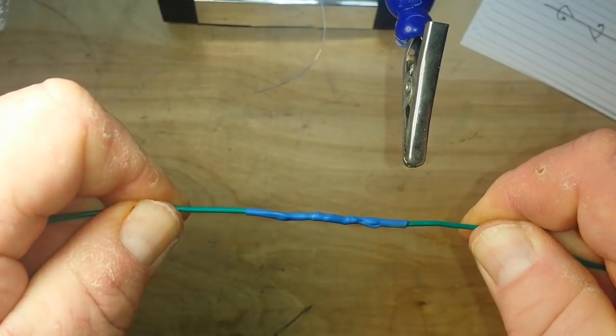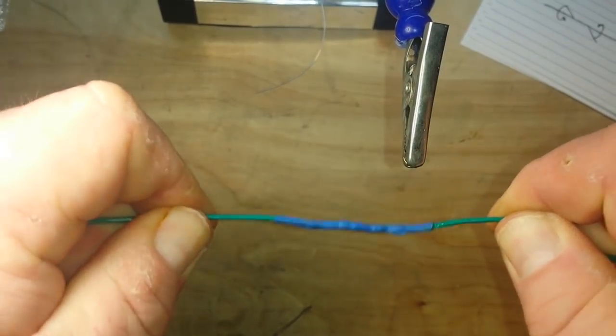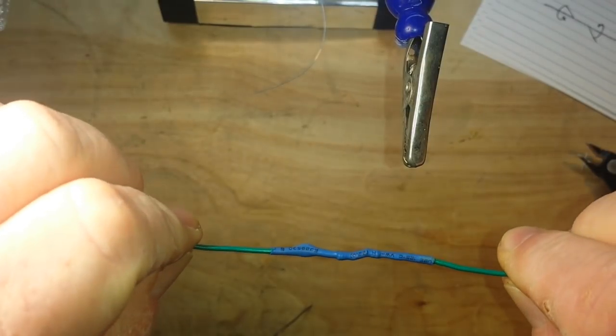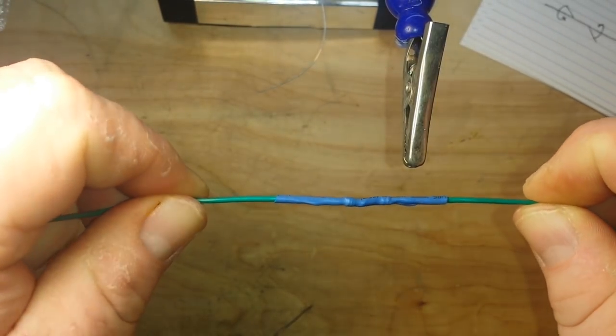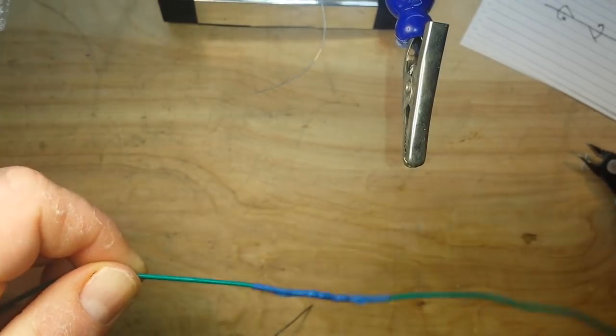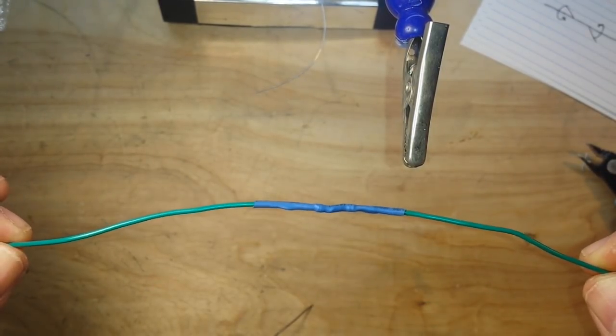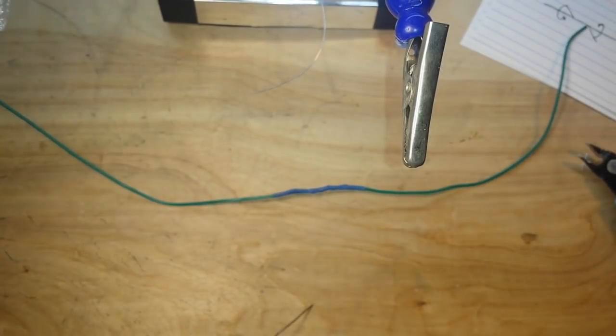Now that is a tight joint that you can yank on and jerk on, and it is not going to come undone. That is a proper wire soldered splice to NASA standards.